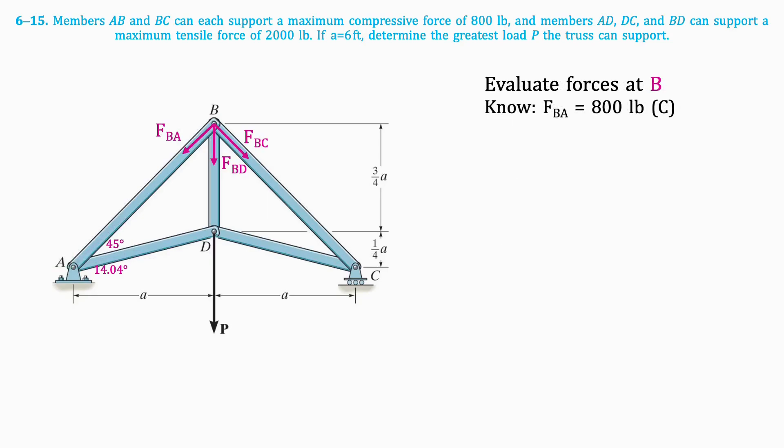Next, we'll evaluate the forces at joint B. We know that FBA is 800 pounds in compression as previously assumed, so by symmetry FBC must also equal 800 pounds. We are able to assume this since the geometry of the truss is symmetrical. Since both forces are compression forces, we must flip their directions in the free body diagram.